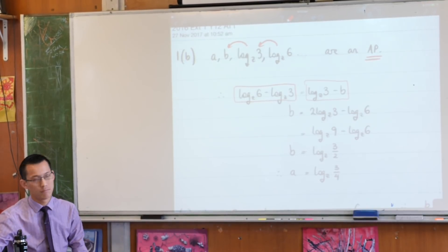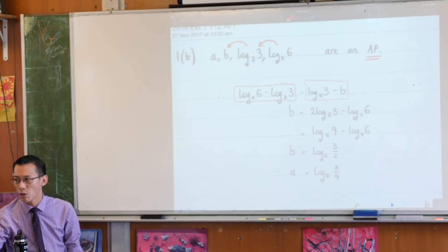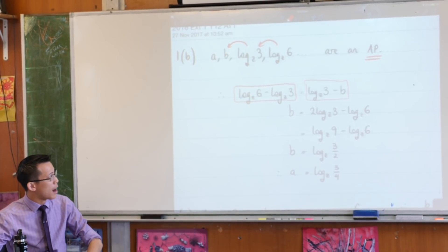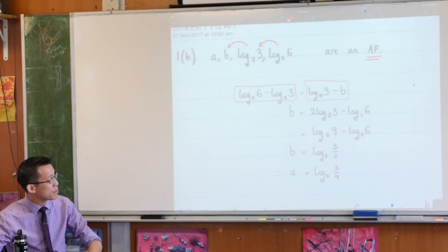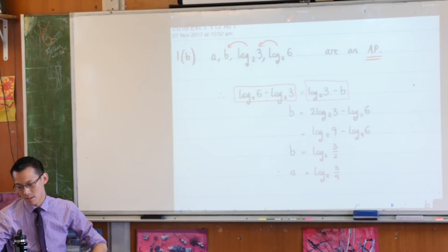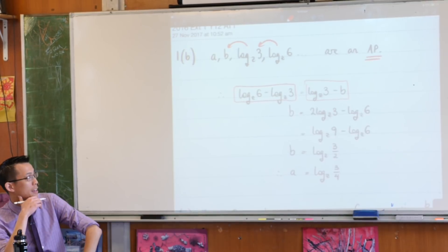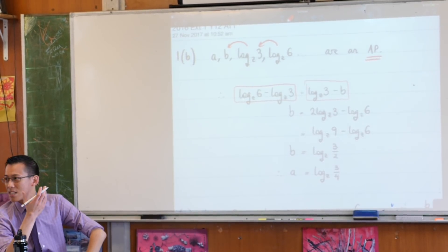And then really there's just a bit of rearrangement, a tiny bit of log laws, but not very much. So can you see how I've laid it out? I was just trying to find b because it's in that equation and it's closest to the amount of information that I know.